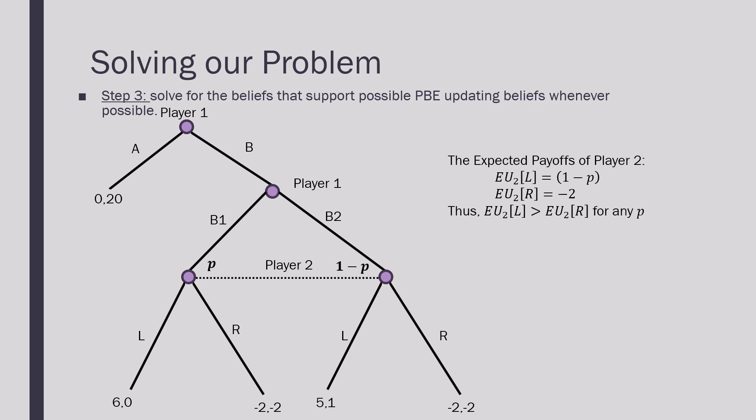Now we need to solve for the beliefs that are going to support this outcome as a Perfect Bayesian Equilibrium, updating it whenever possible. We do that by assigning probabilities at each node on this information set and calculating the expected payoffs of player two playing L and playing R. We see that the expected payoff of player two playing L is going to be one minus p, and for playing R it's going to be minus two. That means that player two is going to get a higher payoff from playing L than playing R for any value of p or any belief that he would have with regards to player one's actions.